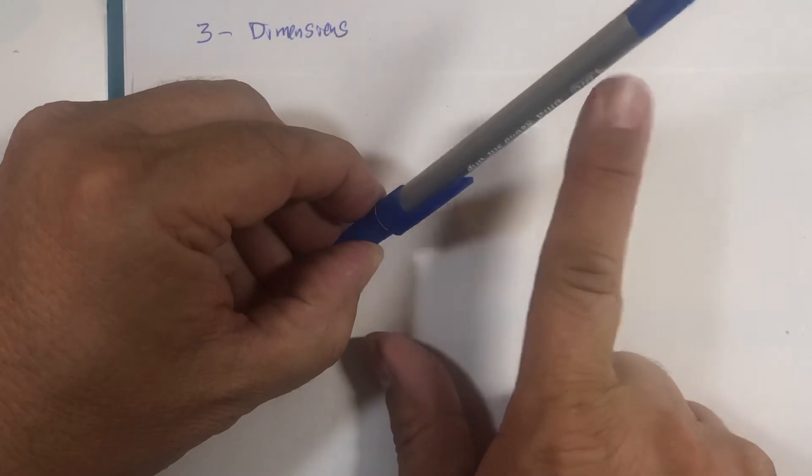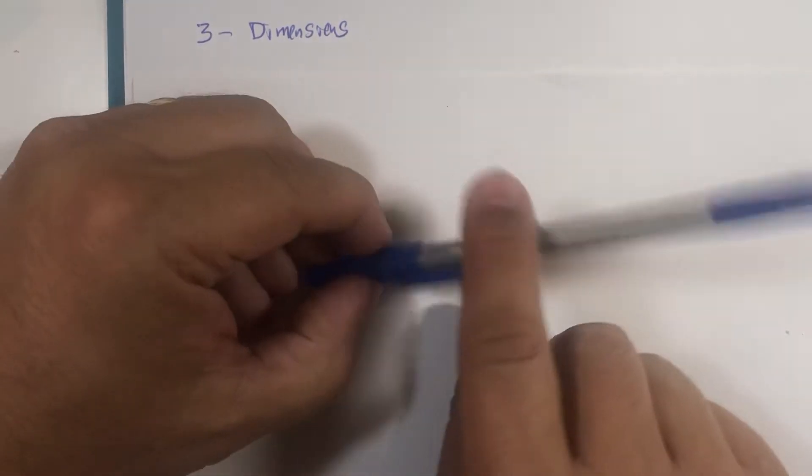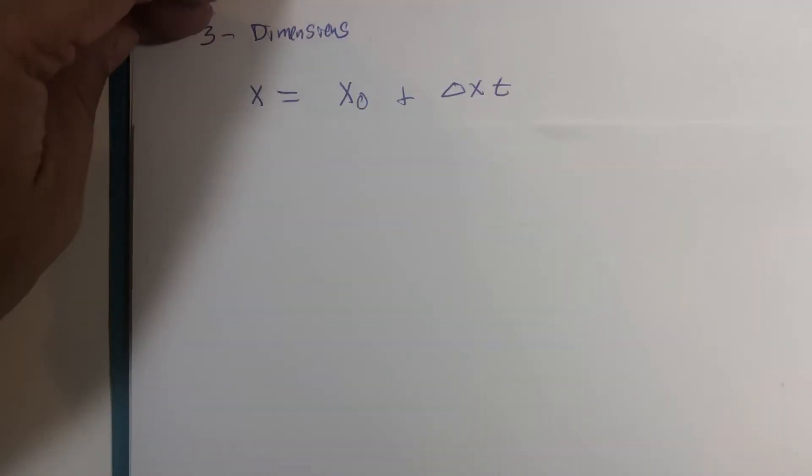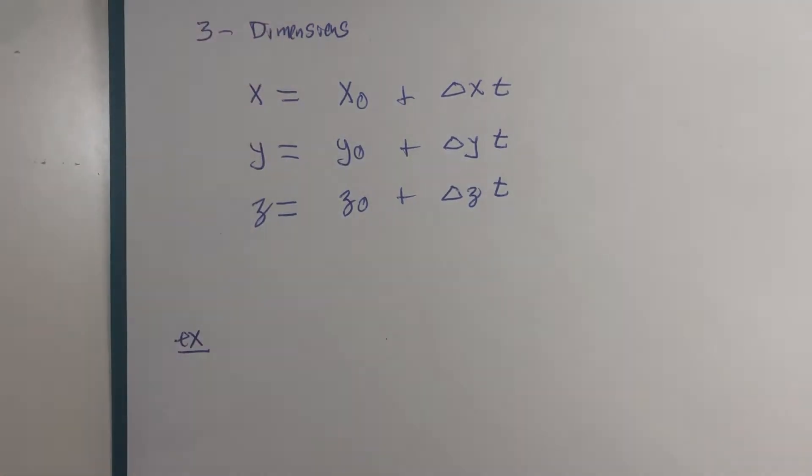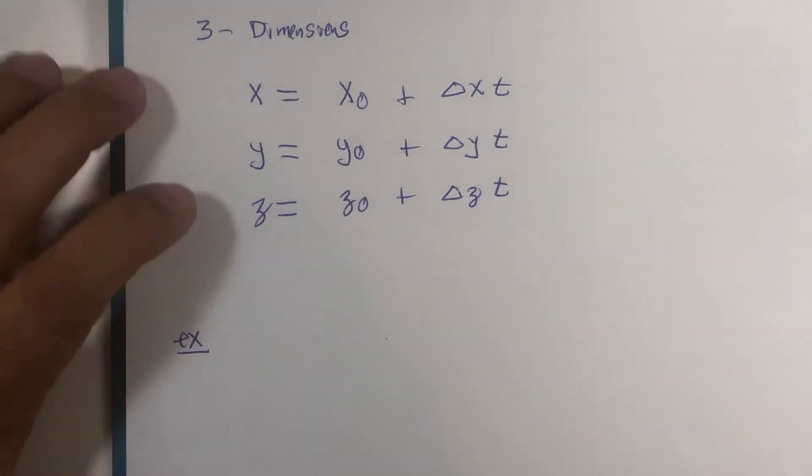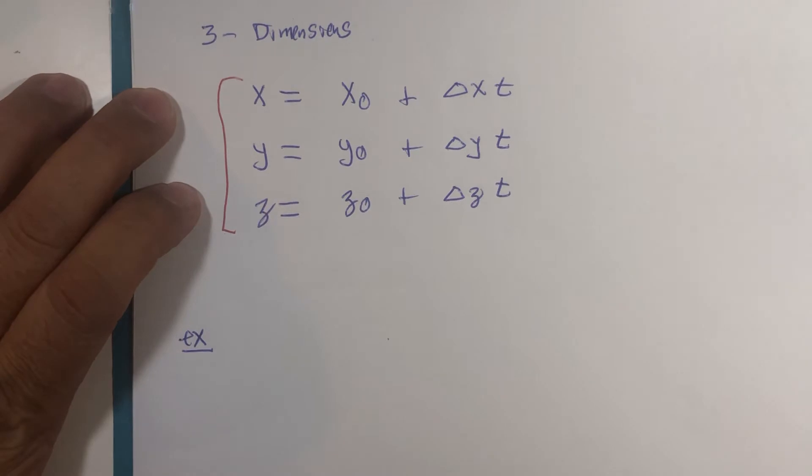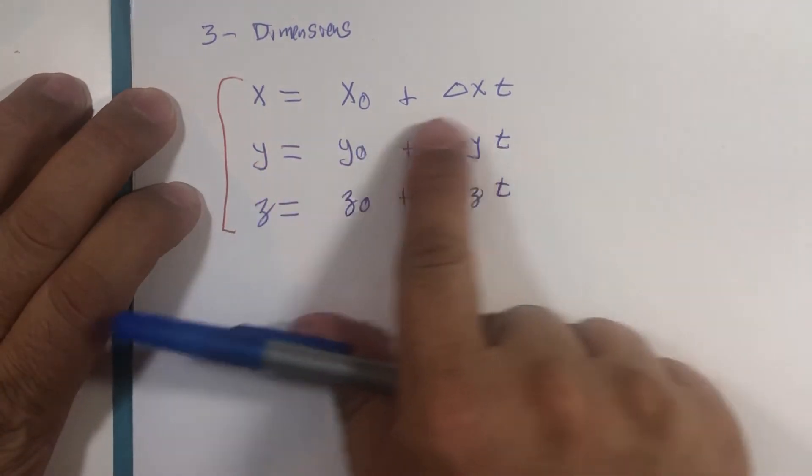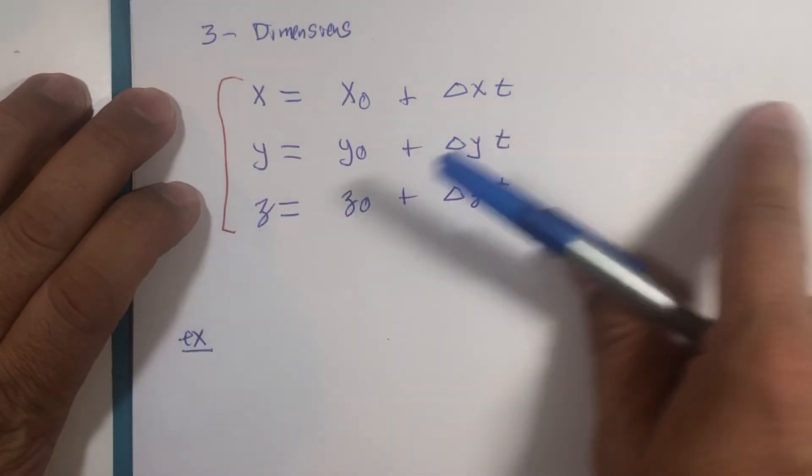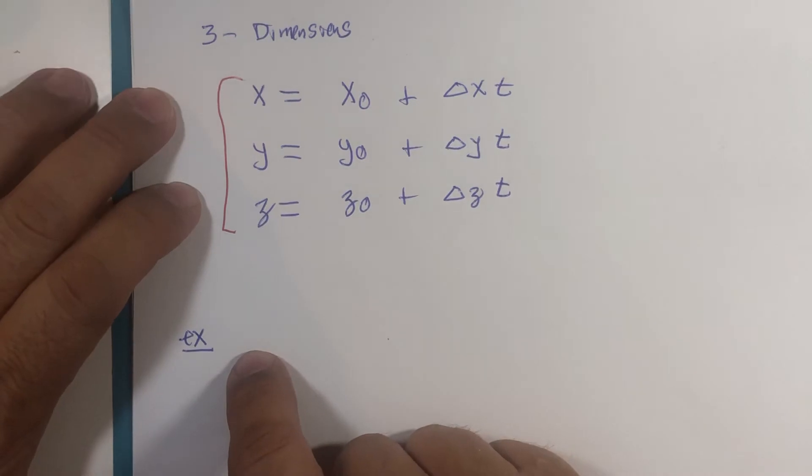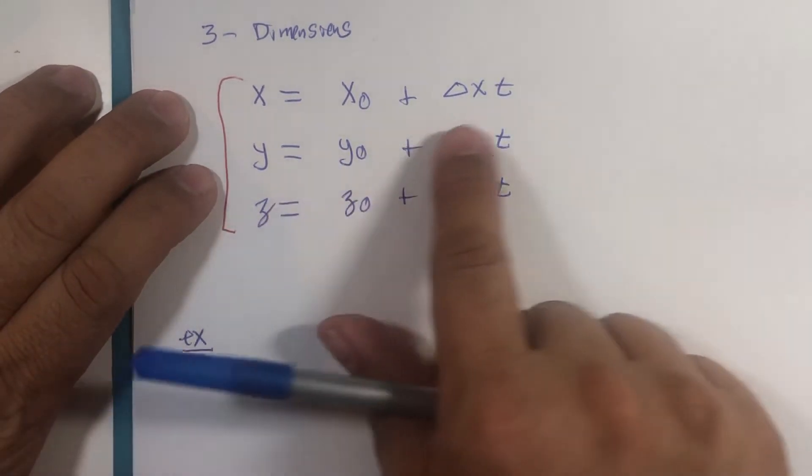The equations are rather simple. They look nearly identical to the set of equations in two dimensions. Sometimes the textbook writes them left to right with a comma separating them. I do not like to do that. I want you to see clearly that there is a parameter.